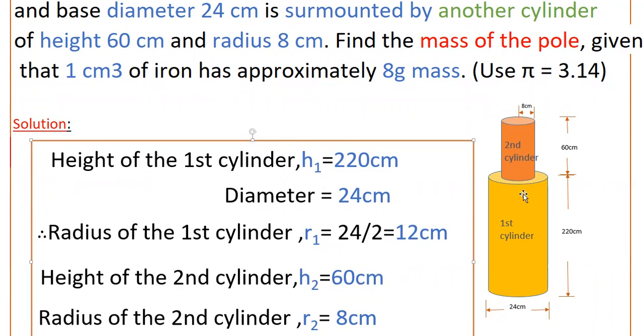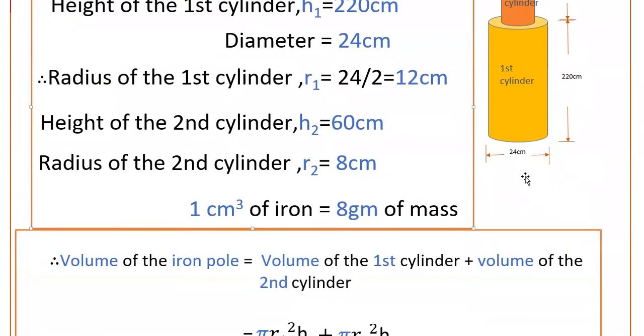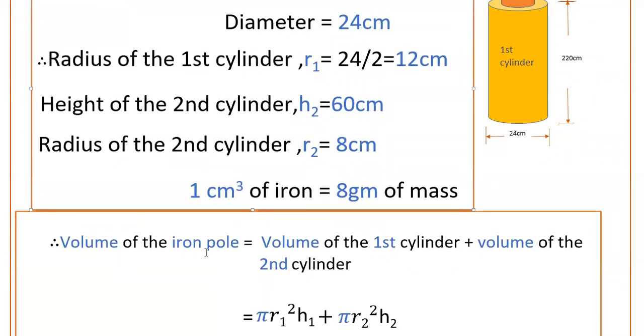To find the mass of the pole, first find the volume of the pole that consists of two cylinders. You have to find the volume of these two cylinders and add them. Volume of the iron pole equals volume of the first cylinder plus volume of the second cylinder.